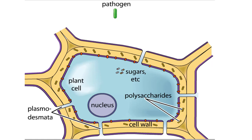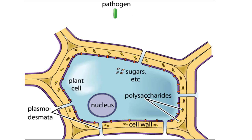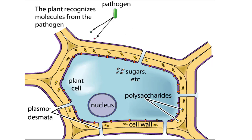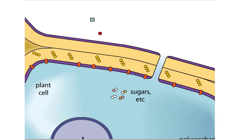Plants and pathogens have co-evolved such that pathogens can recognize plants by the sugars and other molecules they produce. Plants, in turn, can recognize pathogens by the molecules they produce. The ability to recognize pathogens allows plants to activate defense systems that can prevent widespread infection.